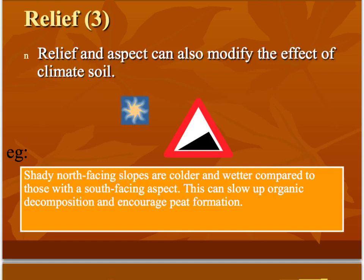Altitude is really important as well. The higher up you are, the lower the temperature and therefore the less biotic activity in the soil. The growing season is also reduced, so plants don't grow for as long and there's not as much litter. At higher altitudes you also generally have more precipitation, so there's a higher water input.